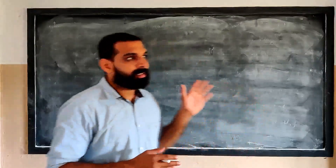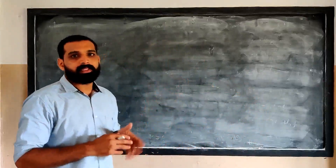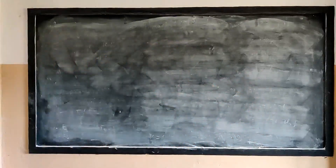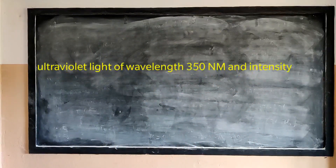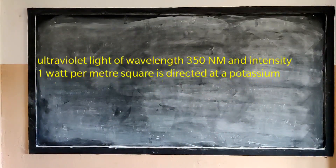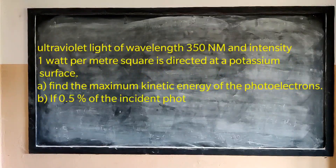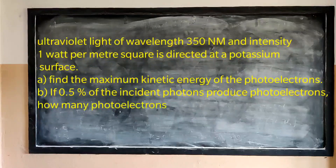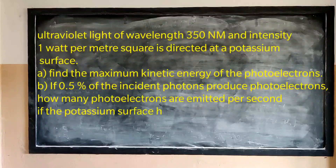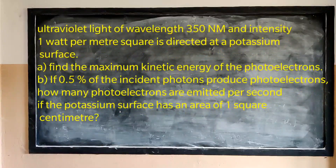The question is: Ultraviolet light of wavelength 350 nanometer and intensity 1 watt per meter square is directed at a potassium surface. Find the maximum kinetic energy of the photoelectrons. If 0.5% of the incident photons produce photoelectrons, how many are emitted per second if the potassium surface has an area of 1 centimeter square?